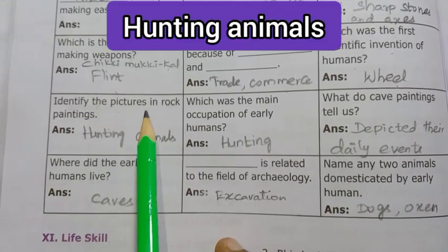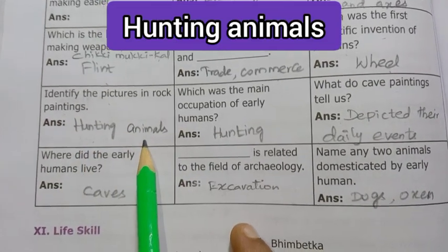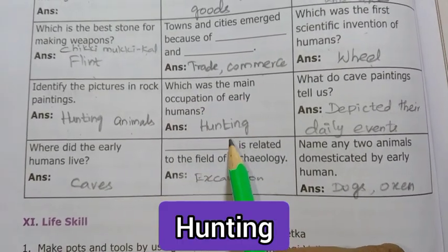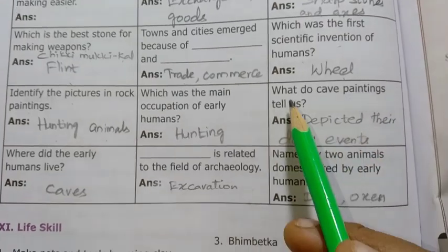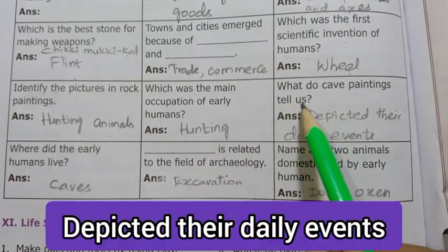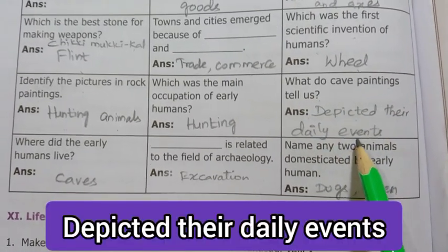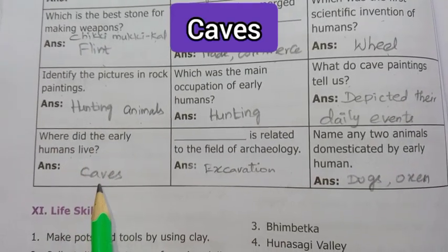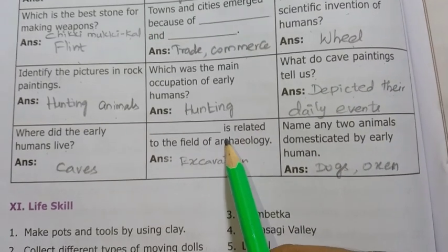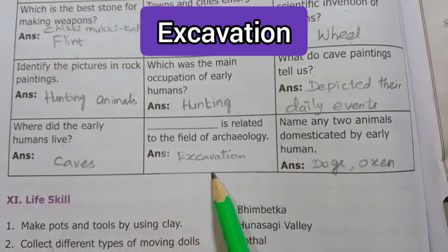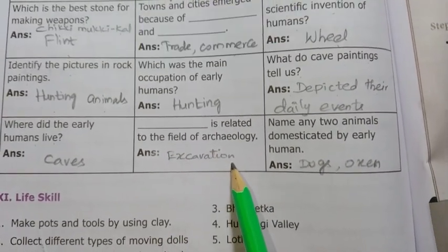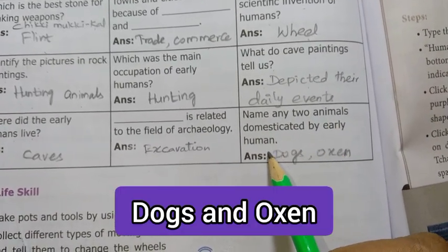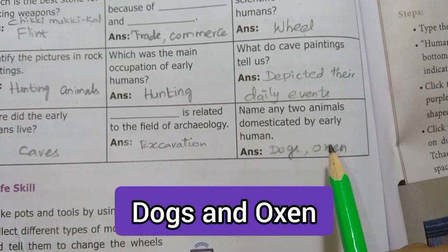Barter system means exchange of goods. Name any two weapons used by early humans for hunting — sharp stones and axes. Which is the best stone for making weapons? Flint. Town settlements emerged because of trade and commerce. Which was the first scientific invention of humans? Wheel. Identify the pictures in rock paintings — hunting animals. Which was the main occupation of early humans? Hunting. What do cave paintings tell us? They depicted daily events. Where did early humans live? Caves. Dash is related to the field of archaeology — answer is excavation. Name any two animals domesticated by early humans — dogs and oxen.